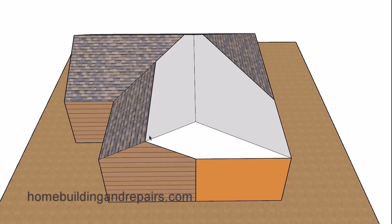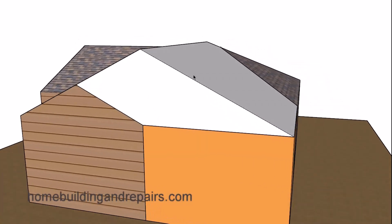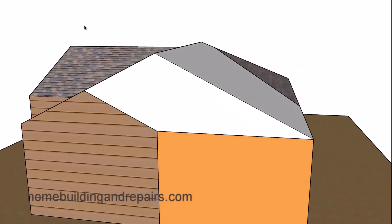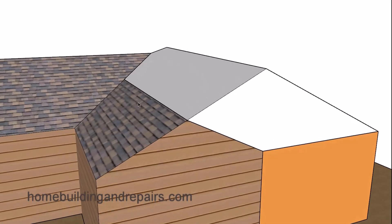If that's the case, you might want to do something like this where you extend the roof on this side and then build a new roof over here. This roof will plane into this area to create a flat surface — nice and flat over here.